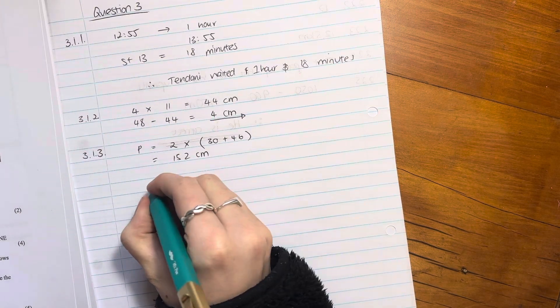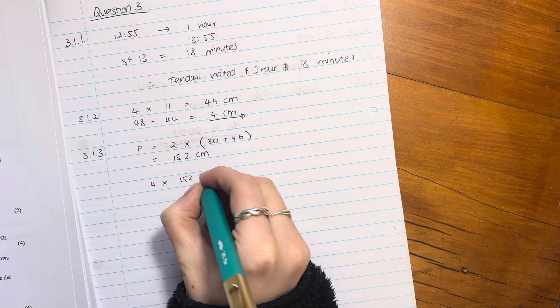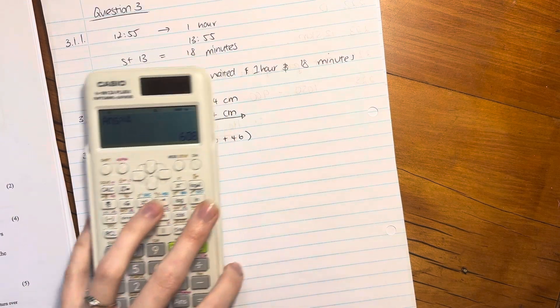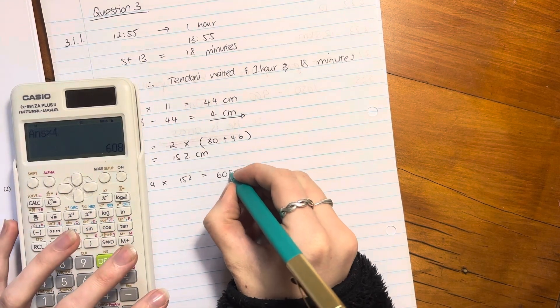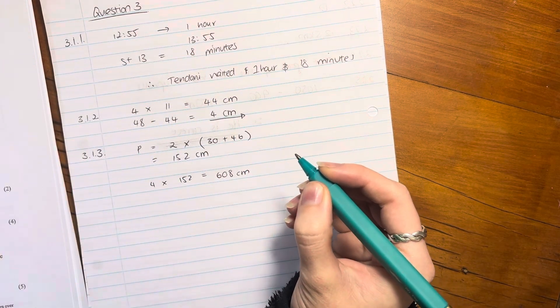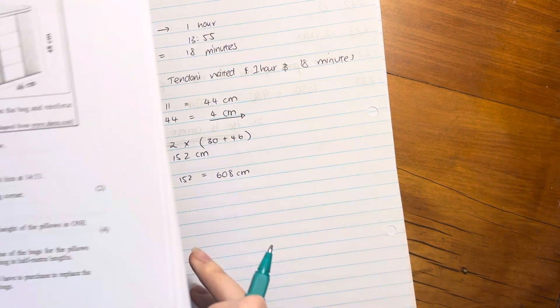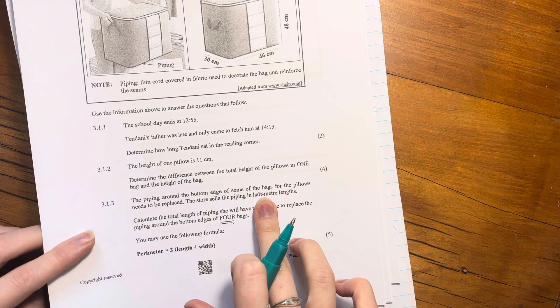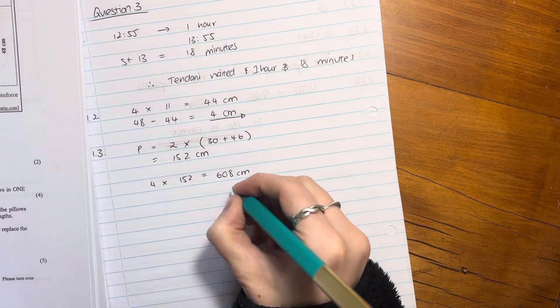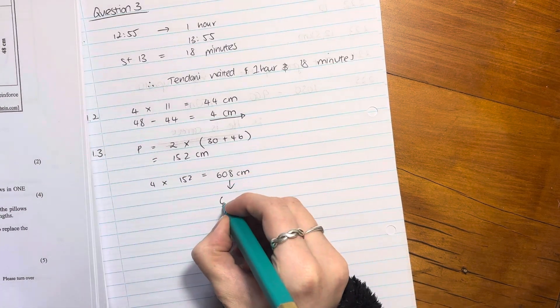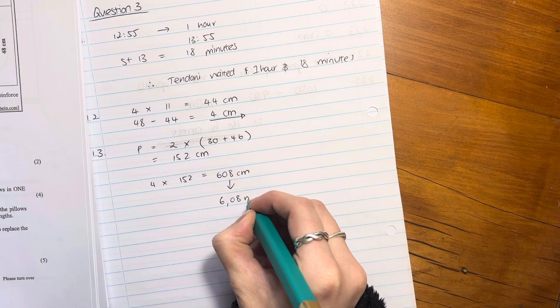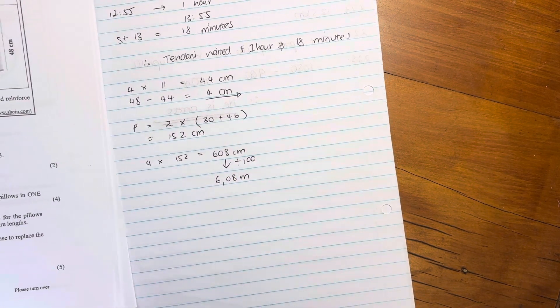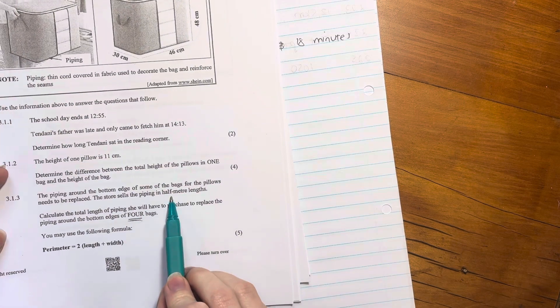So four bags. So we have to say four times 152. So there's that times it by four. And that gives me 608 centimeters. So it asks us to calculate the length of piping she will have to purchase. But she purchases in half meters. So because that's in centimeters, let's convert that into meters. So it's 6.08 meters because we divide that by 100. So we have that. But now she can only buy it in half meters.